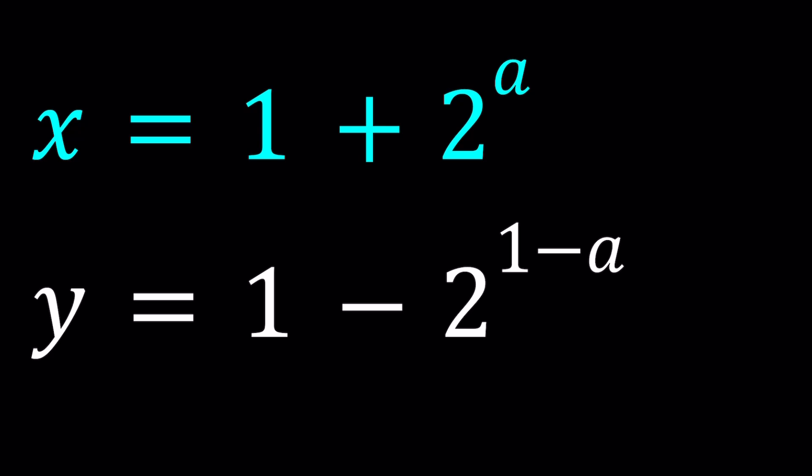So parametric equations are pretty common in calculus, especially when the parameter is t. t is used for time most of the time, so you can basically explain the motion of a particle in time in two different directions, and then try to find the relationship between x and y. So that's what we're going to try to do here.